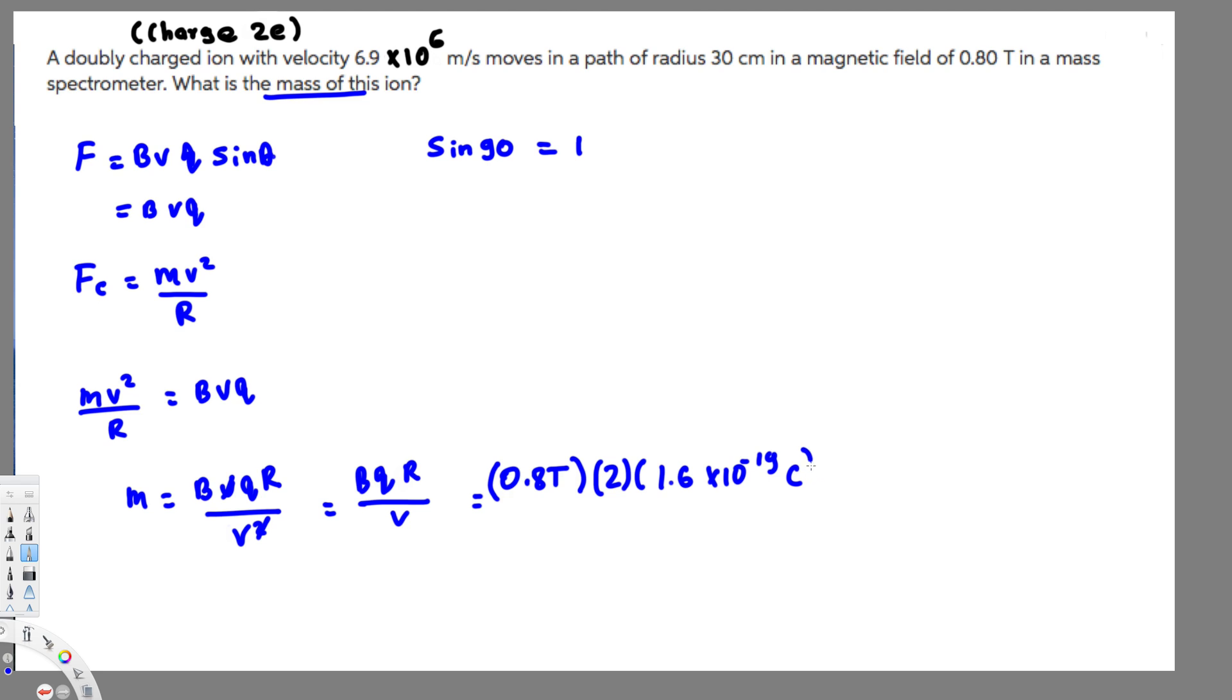Then we have the radius, given by 30 centimeters. To convert this to meters, we multiply by 10⁻².